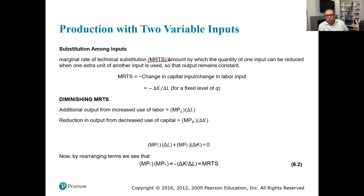MRTS is the amount by which the quantity of one input can be reduced when one extra unit of another is used, so that output remains the same. MRTS equals the change in capital divided by the change in labor, written as minus delta K over delta L. Delta K is the change in capital and delta L is the change in labor for a fixed level of output. Just like the indifference curve, MRTS is diminishing.